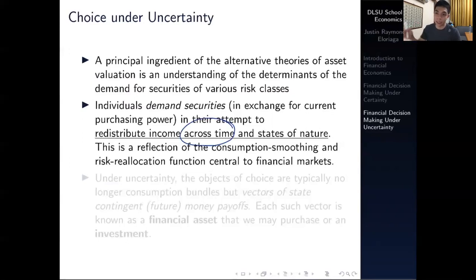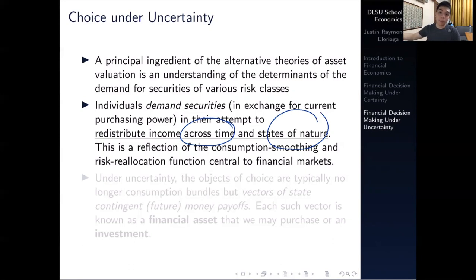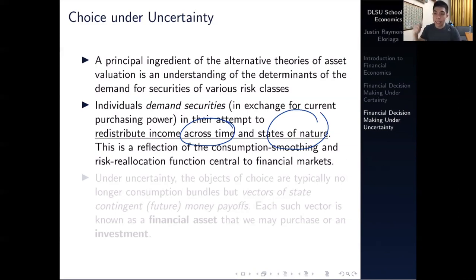Redistributing across time is more directly about consumption smoothing — you want your standard of living to be approximately, gradually increasing over time. But across states of nature is something new. A state of nature is a state of the world: you could have a favorable state where market conditions are good, no recession, low unemployment, and a booming stock market; or you could have the opposite — a state of recession, low economic growth, and high unemployment. You're generally not sure what state of nature the world will be in tomorrow, as these things fluctuate over time. Demanding financial securities is a reflection of consumption smoothing and a risk reallocation function central to financial markets.